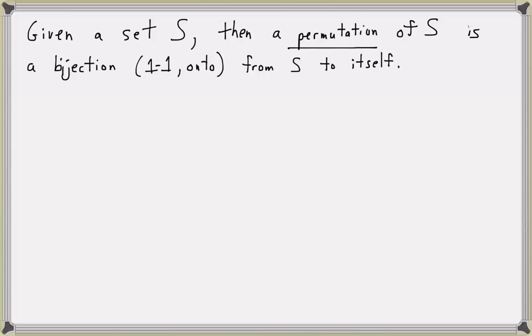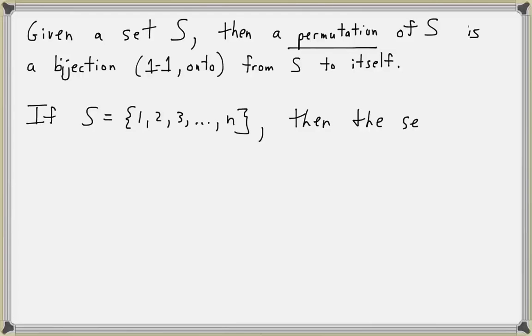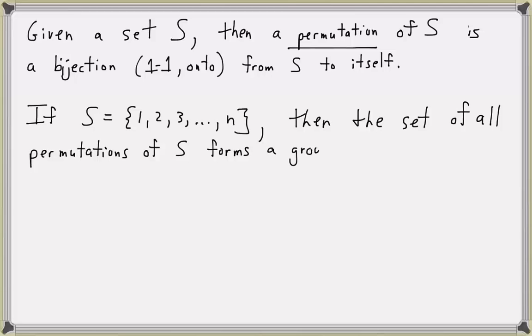We're going to look at the particular set consisting of the integers one through N. If our set S contains integers one, two, three, up to an integer N, then the set of all permutations of S actually forms a group. And since the permutations are functions, the operation for this group is function composition.